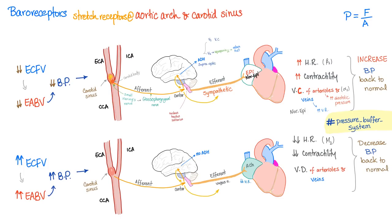Baroreceptors are pressure receptors. They respond to stretch and they are found in most of the big vessels, especially the aortic arch and the carotid sinus. The carotid sinus: you have the common carotid artery branching into the internal and external carotid arteries. At the beginning of the external carotid artery there is an enlargement — we call this the carotid sinus. There is also a body here called the carotid body. The carotid body and the carotid sinus are very close but they are not the same thing.